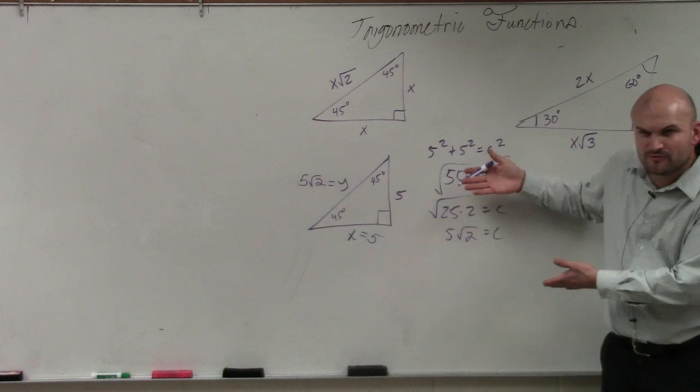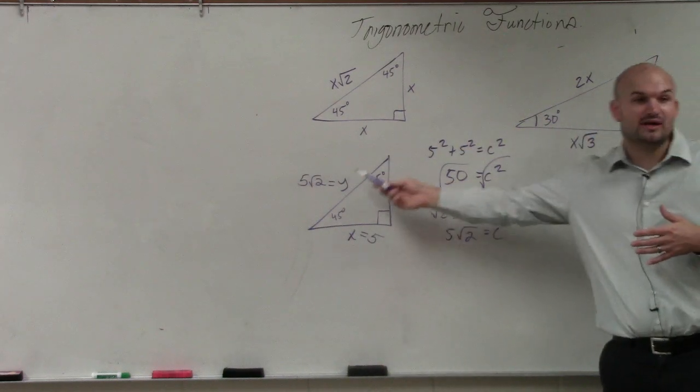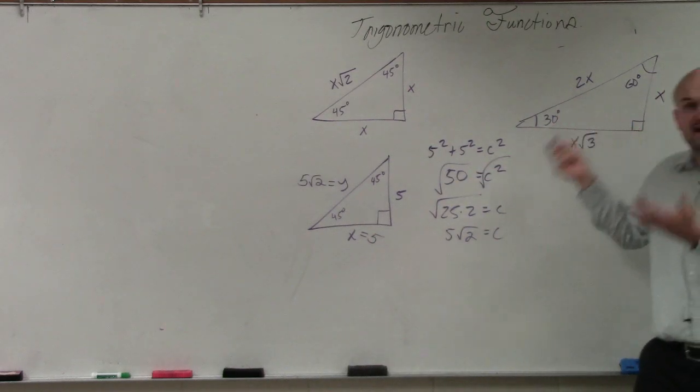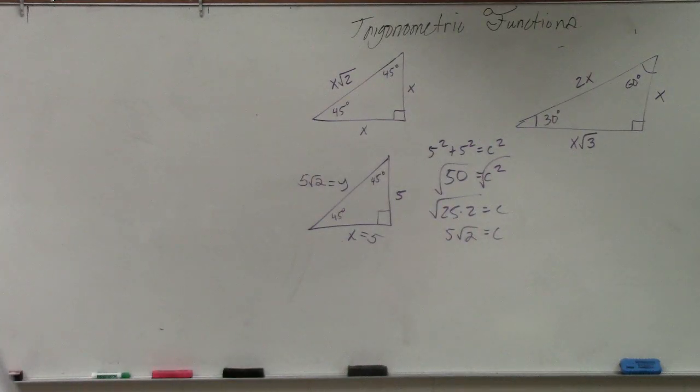OK? So rather than doing all the math work for Pythagorean theorem, if we have a special right triangle, we can quickly use the relationships to find the side lengths. That's what special right triangles are nice, because they're a little bit of a shortcut. Does that make sense?